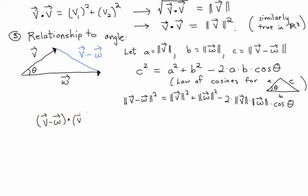So, since I have the length of V minus W squared, I can write that as V minus W dot V minus W. And the same thing when I have the length of V squared and the length of W squared.